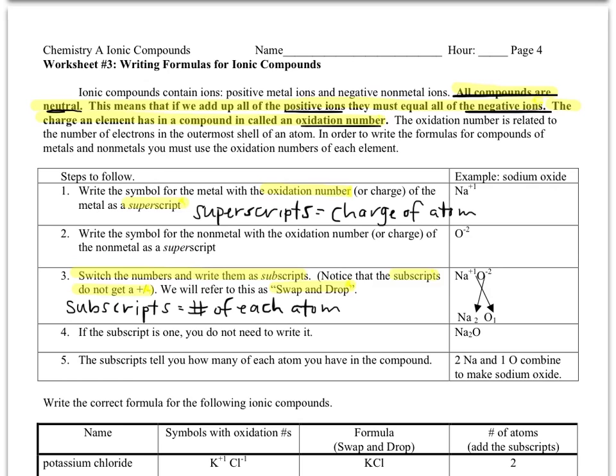Now the other key here is going to be to learn and really remember the difference between a superscript, a number written up high, and a subscript, a number written down low. We'll talk about what that means as we go.